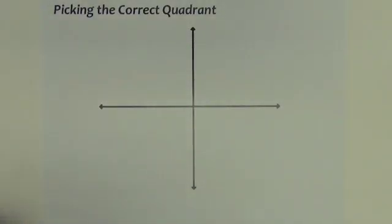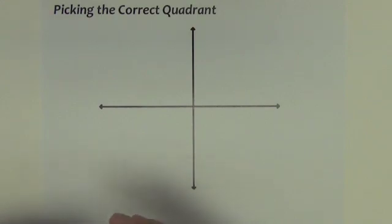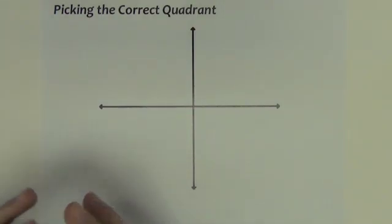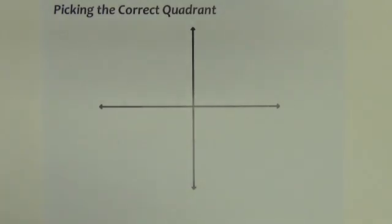Let's do a little bit of instruction on how to determine the correct sign — positive or negative — of the trig function values in each of the four quadrants.